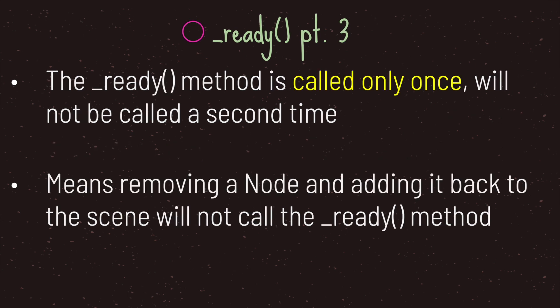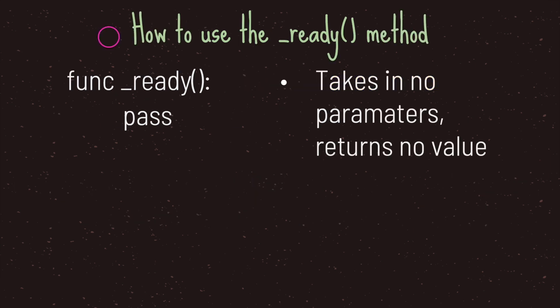The most important takeaway from this episode is that the ready virtual method is called only once — it will not be called ever again. This means that removing a node from the scene tree and then adding it back will not call the ready virtual method, as it has already been called when it was first initialized onto the scene tree.